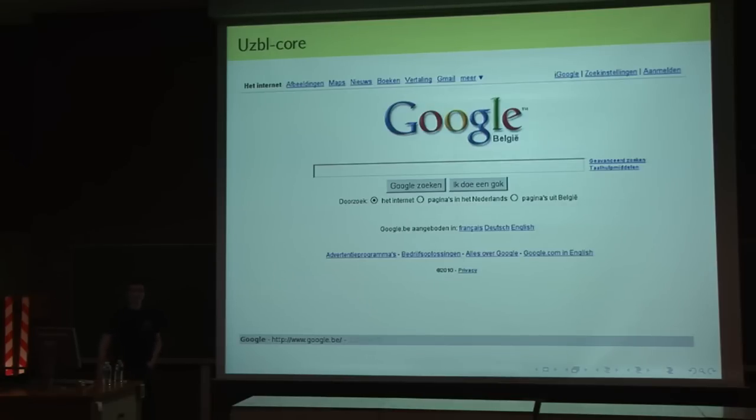So, this is how uzbl-core looks like. I will do uzbl-core and then browser and then tabbed. As you can see, it's very simple. One WebKit GTK view and one WebKit status bar, which by default just contains the page title and the URL, but you're supposed to put in it whatever you want.